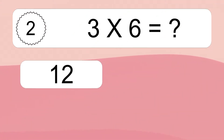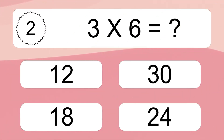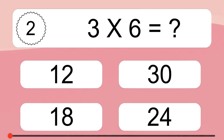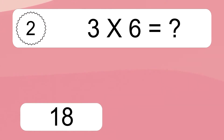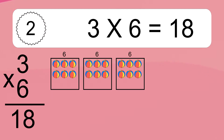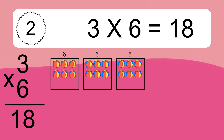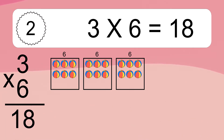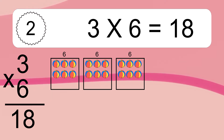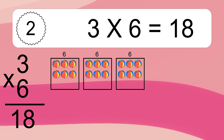3 times 6 equals what? 3 times 6 equals 18. We have 3 boxes and each box has 6 colorful balls inside. If you count all the balls in all the boxes together, you will have 3 times 6 balls. This equals 18 balls.